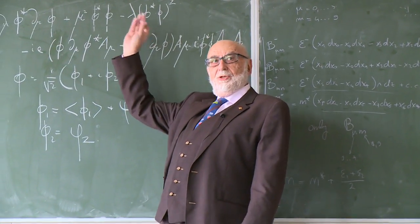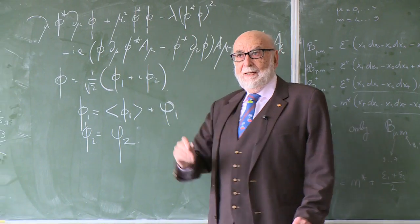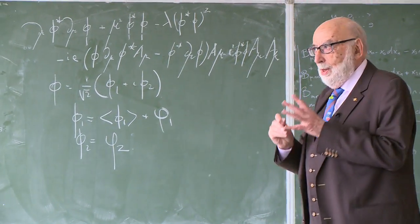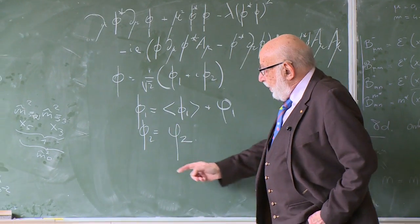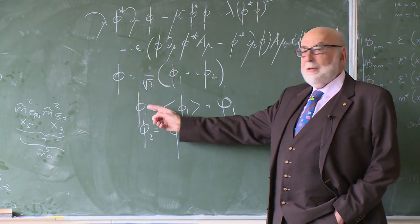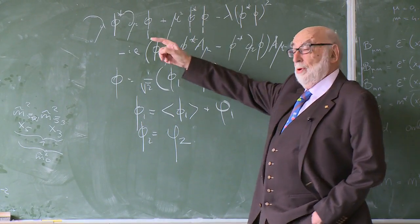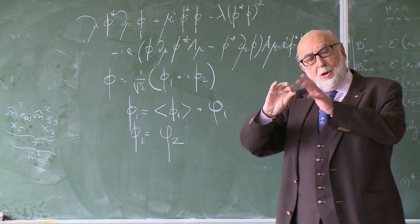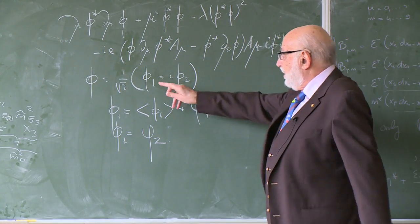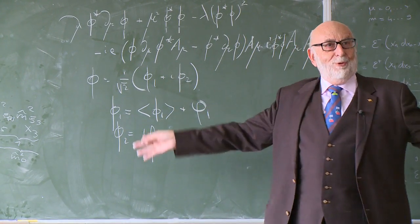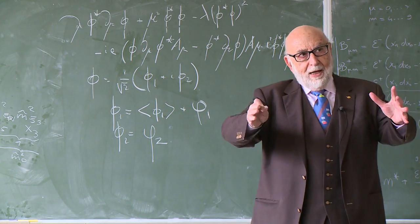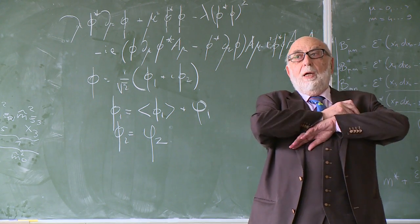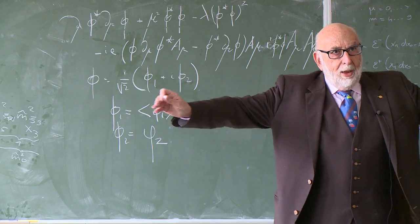So we invented a scalar field which is this object with phi, and we did the following thing. We decomposed one of these fields. This field here is what's called a complex field. It means it's a collection of two fields which can be called phi 1 and phi 2.